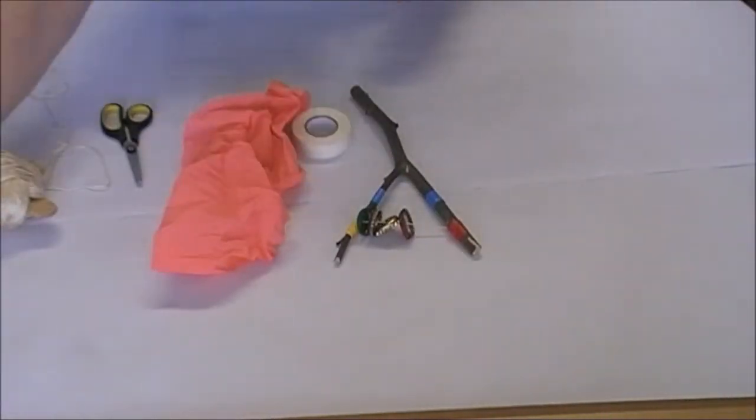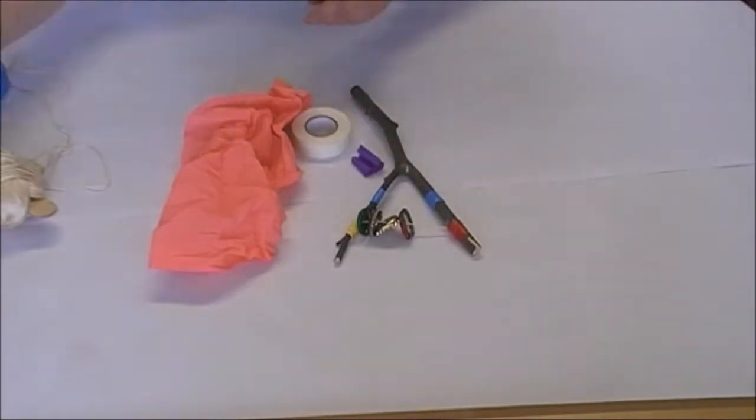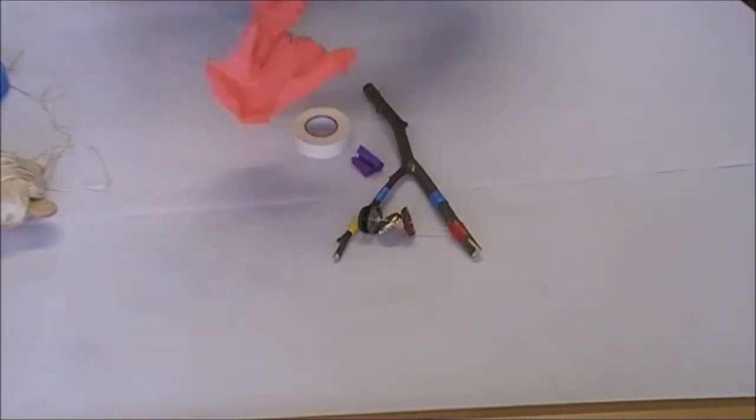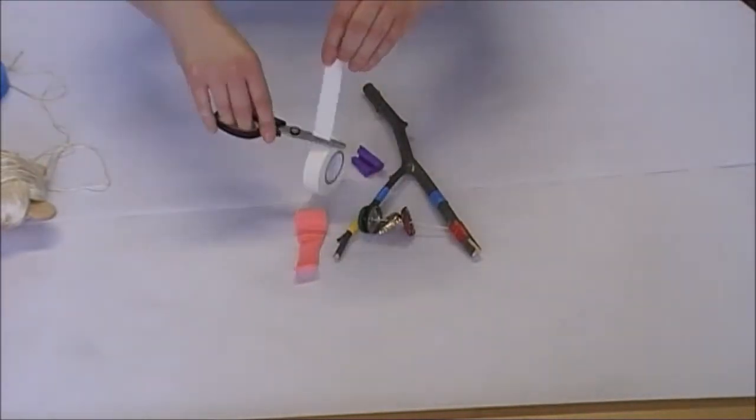We are then going to get some crepe paper and cut these into short strips. You can use any sort of paper that you might have, whether it be newspaper or colored paper, just to help the stick be a little bit more colorful.